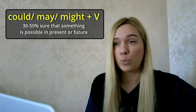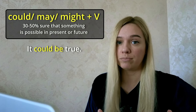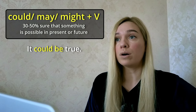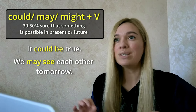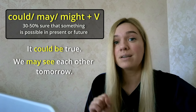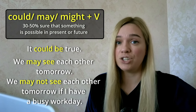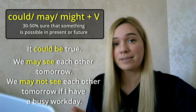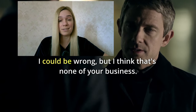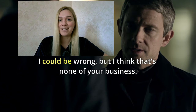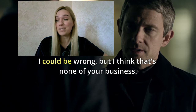If you think that something is possible in the present or future but you're not sure, use could, may, or might with the infinitive. For example: 'It could be true' — it's possible that it's true, but you're not sure. Or: 'We may see each other tomorrow' — there is a possibility we will see each other. You can also negate sentences: 'We may not see each other tomorrow if I have a busy workday.' From Sherlock: 'I could be wrong, but that's none of your business' — even though Watson admits he might be wrong, he's really just telling Moriarty to mind his own business.